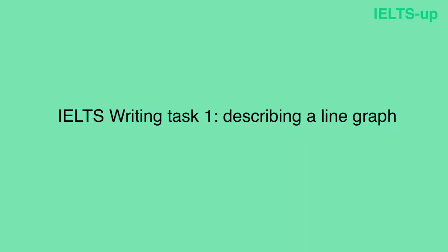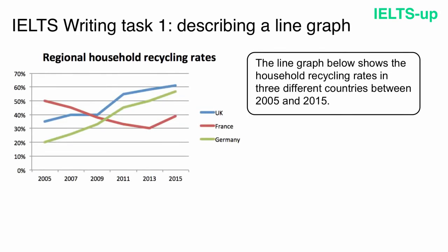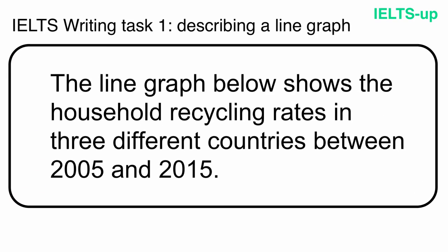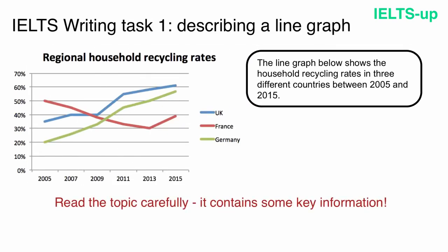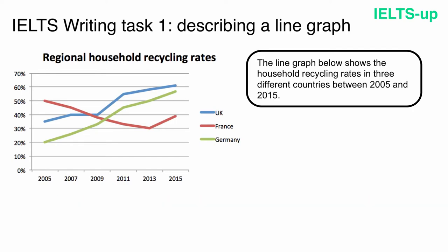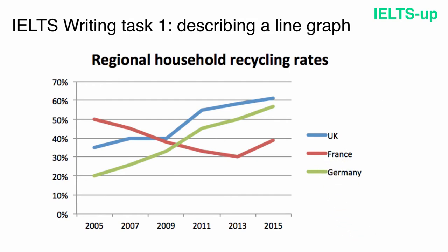It's IELTS upwriting tutorial and in this lesson we are going to learn how to answer IELTS academic writing task 1 — namely, how to describe a line graph. I'll give you all the essential information to give a band 9 answer. The line graph below shows the household recycling rates in three different countries between 2005 and 2015. You are always given a description of your graph in your topic — read it carefully. Down the vertical axis we have the percentages and along the horizontal axis we have the years. We have three countries: the UK in blue, France in red and Germany in green.